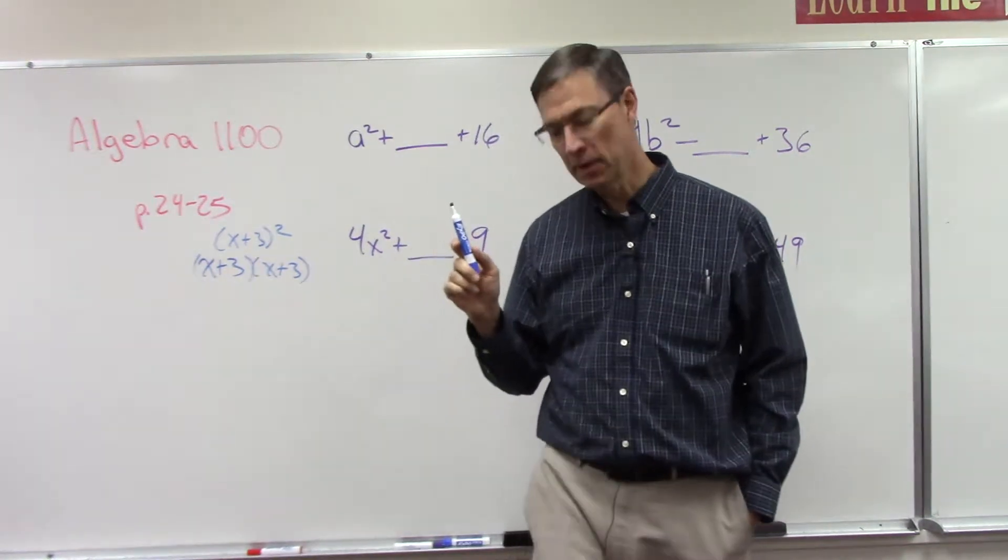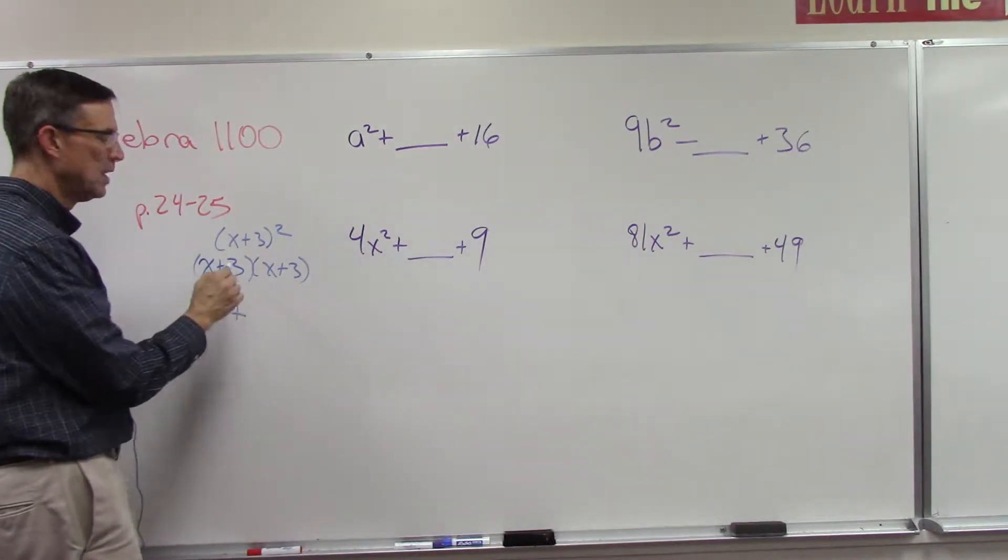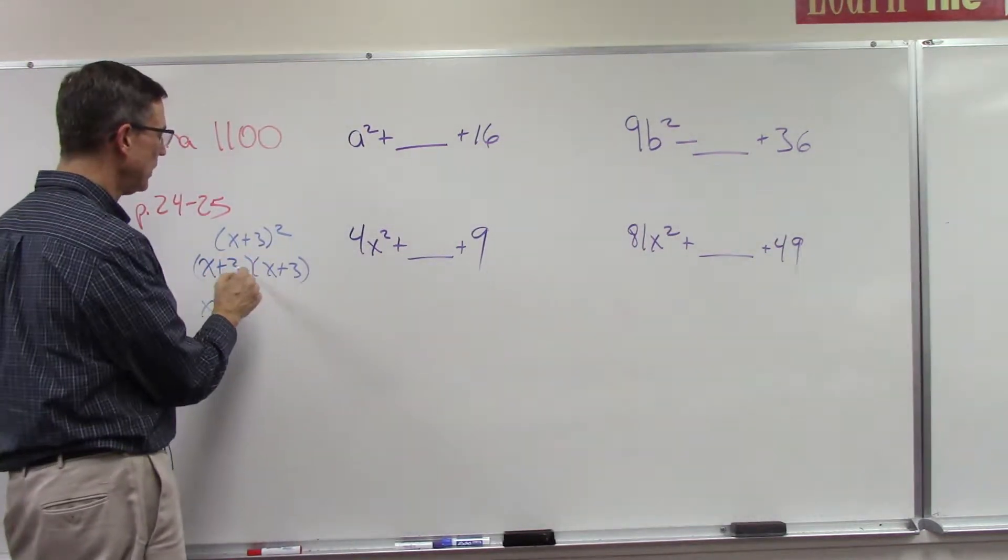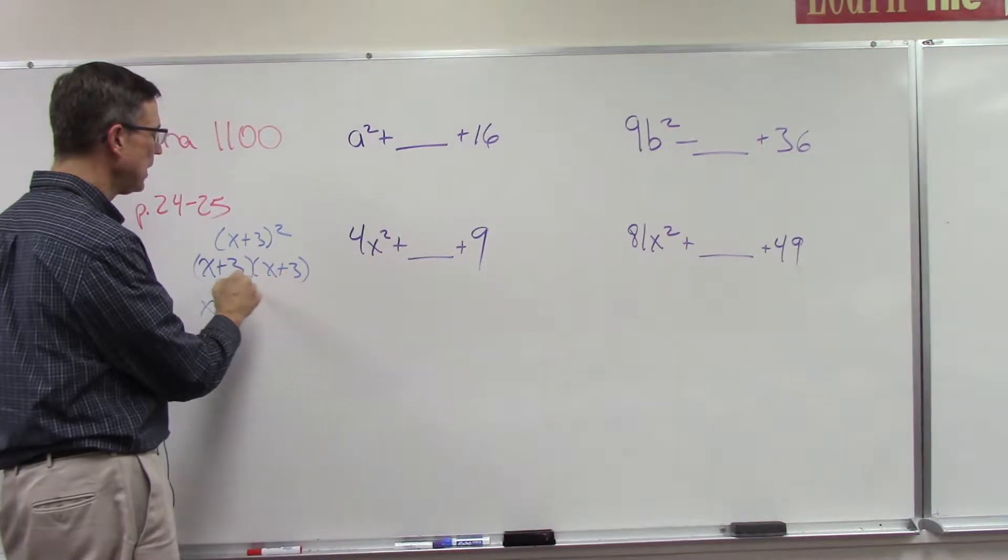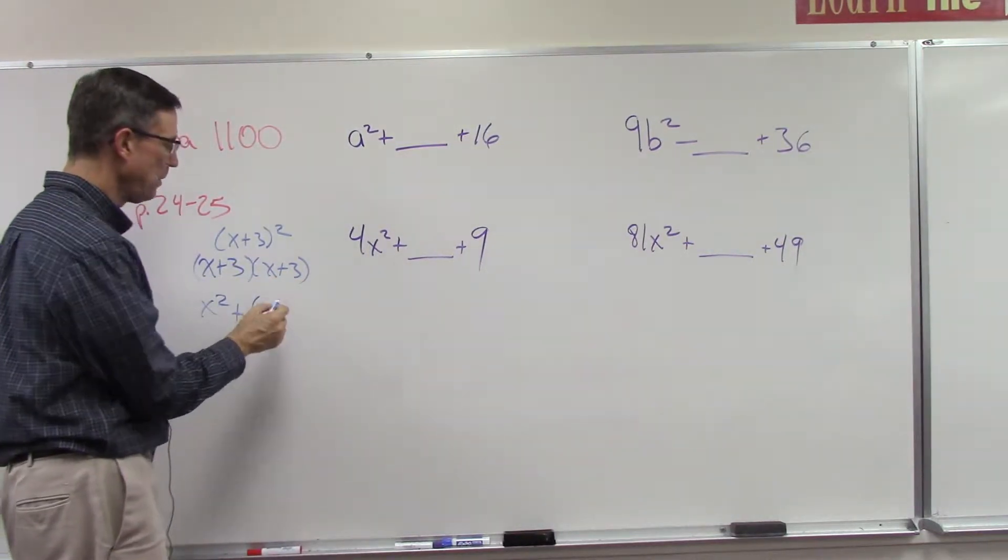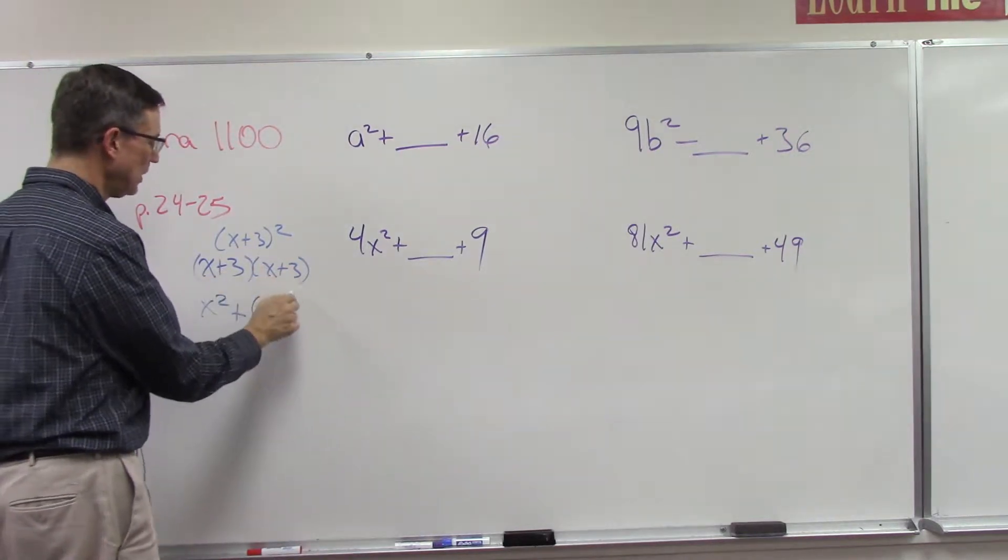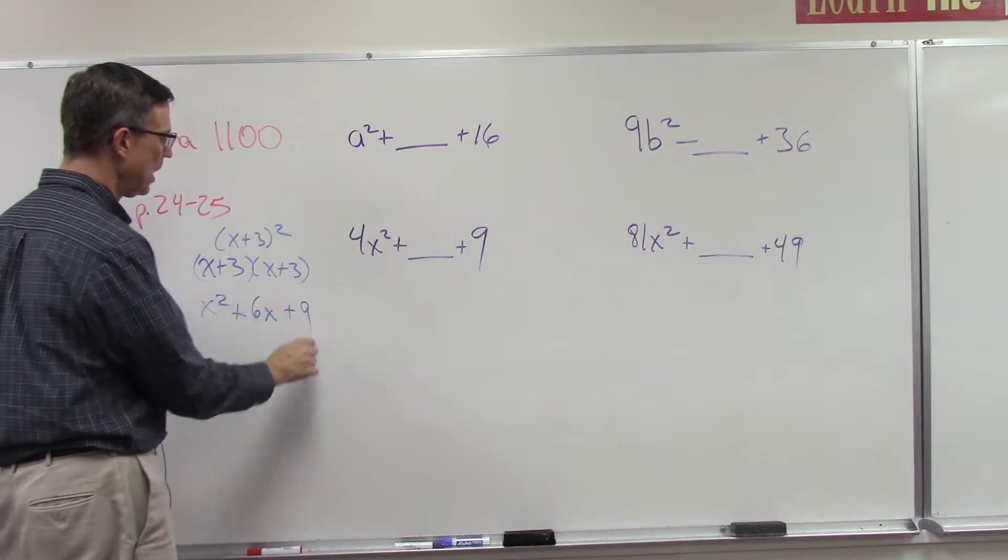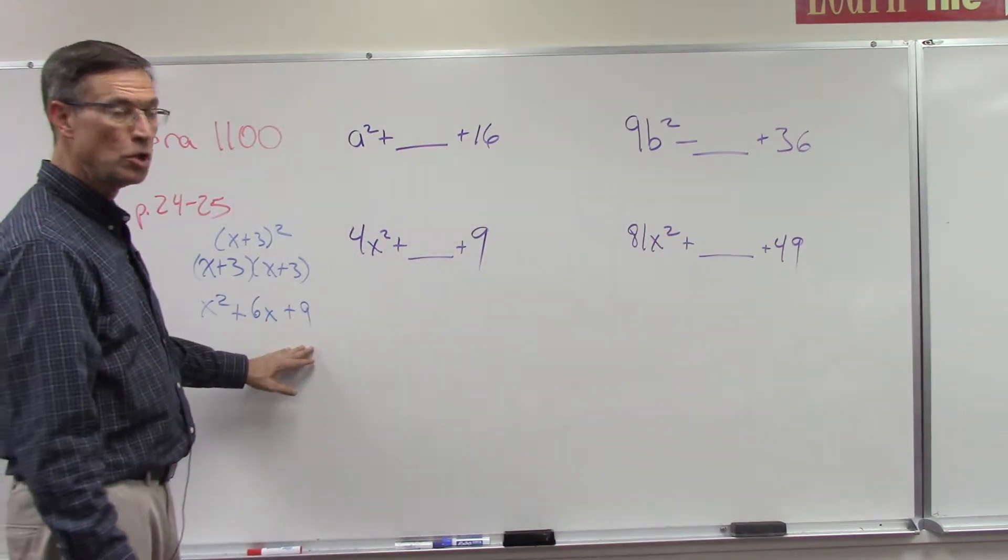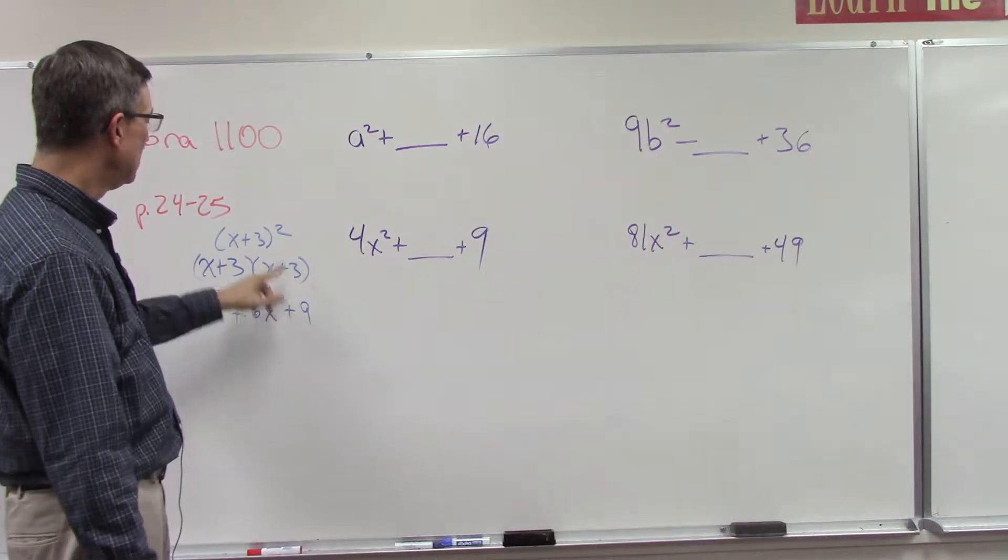Now let's remember the FOIL method would give us x squared plus—let's see, if we're going to do this a little bit faster in our head, the outer is 3x and the inner is 3x, so I would get 6x because I'm adding like terms, and then 3 times 3 is 9.